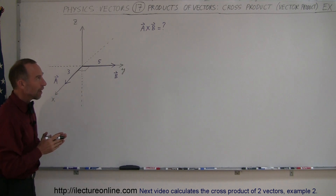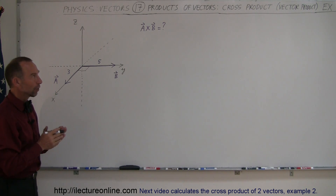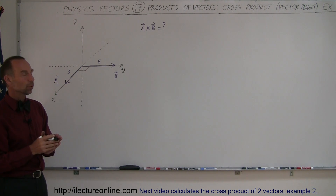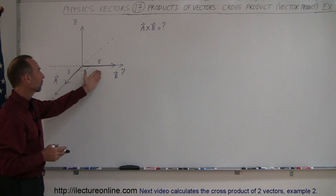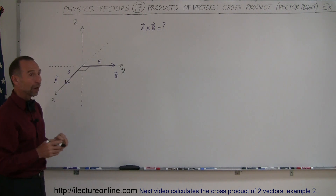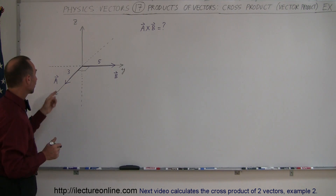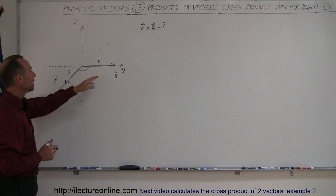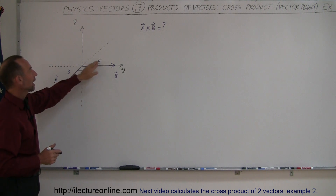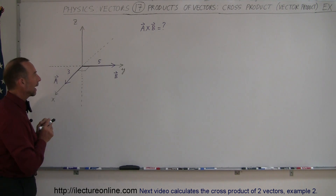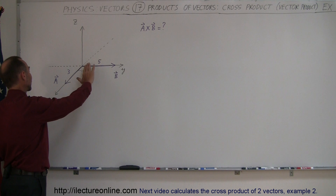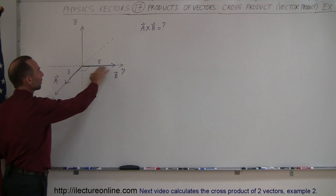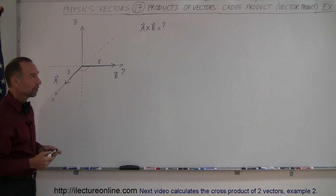In our first example of how to take a cross product between two vectors, here we have vector A and vector B, so we want to find A cross B. Notice that vector A has a magnitude of 3, vector B has a magnitude of 5, and since vector A is along the x-axis and vector B is along the y-axis, the angle between them must be 90 degrees.